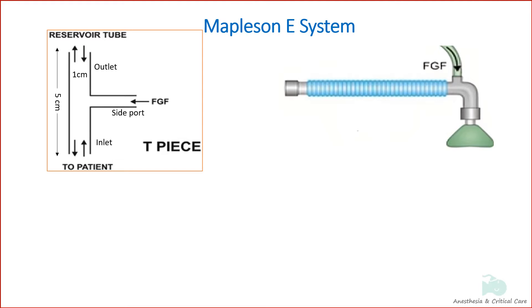Fresh gas enters the system through the side arm, the expired gas is vented through the outlet into the atmosphere, and the patient breathes in through the other end of the inlet.